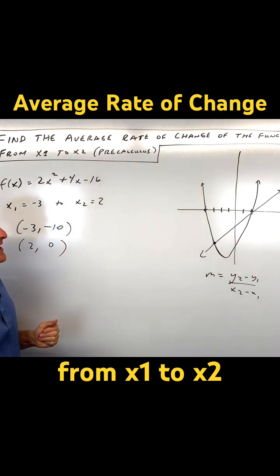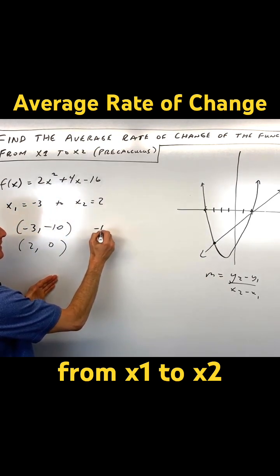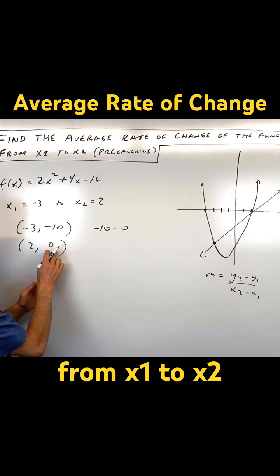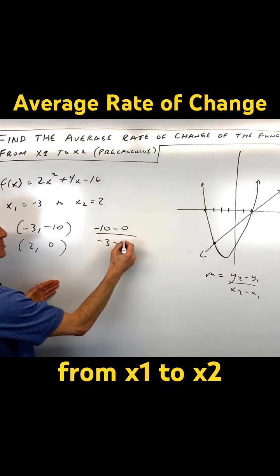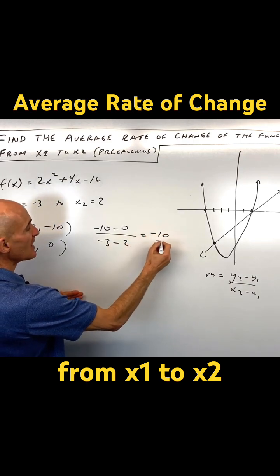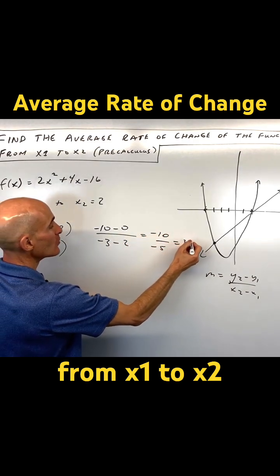So we've got our two points now. Let's put them into our slope formula. So this is going to be negative 10 minus 0, I'm just subtracting the y values, divided by negative 3 minus 2, which equals negative 10 over negative 5, which equals 2.